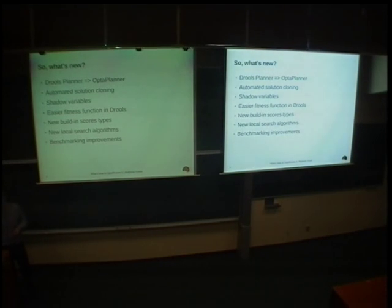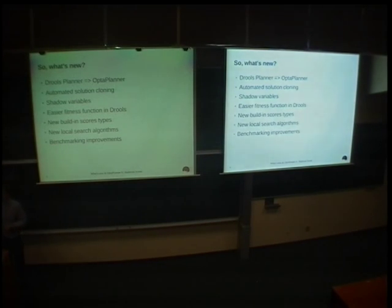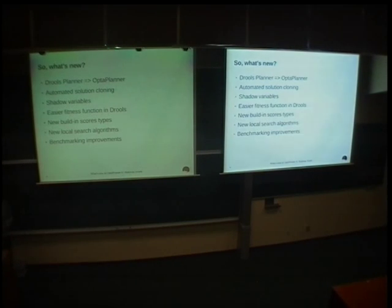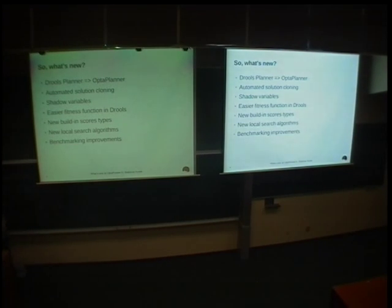So, what's new? The name has been changed, at least. The project had been called Drools Planner before, but it matured to a stand-alone project called Optaplanner. The change of name isn't the only new thing, of course. We have also new features: automated solution cloning, shadow variables, some improvements when you want to write your fitness function in rules, new score types, new local search algorithms, and some benchmarking improvements.